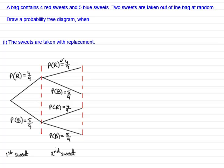So I would encourage you to try and change your tree diagrams to look something like this when you've got sweets that are taken out, for instance, with replacement. Now, what I want you to do now is to try another problem.